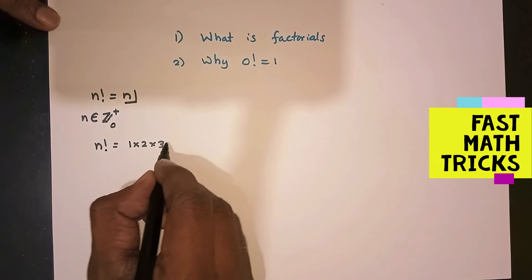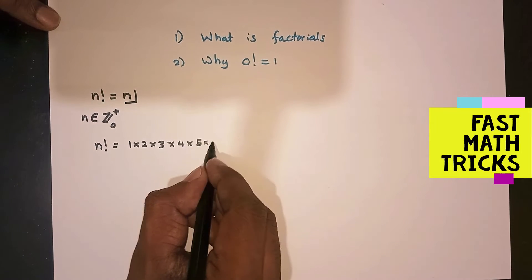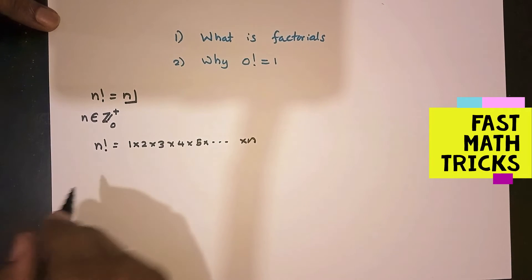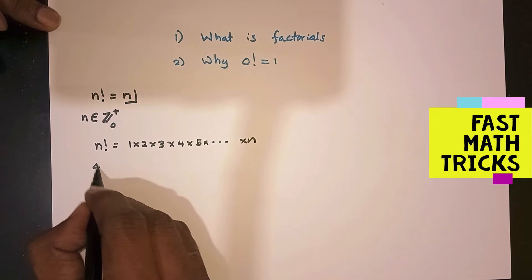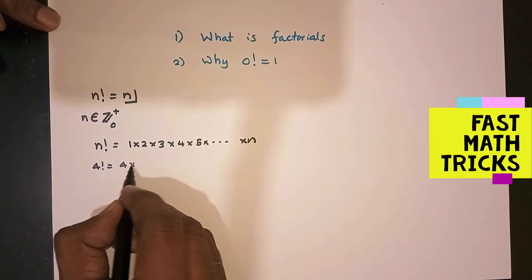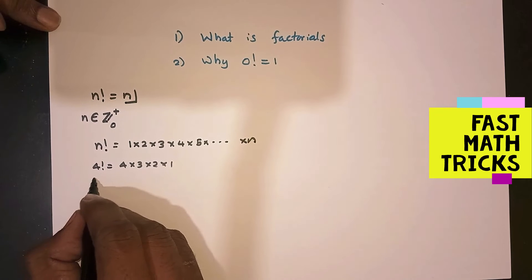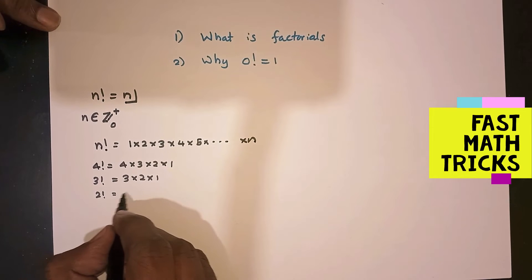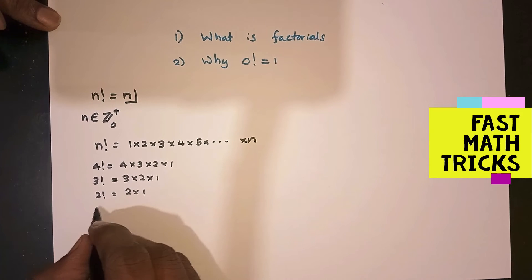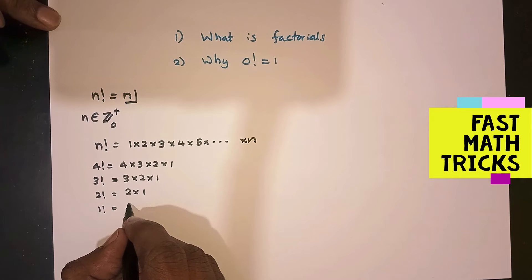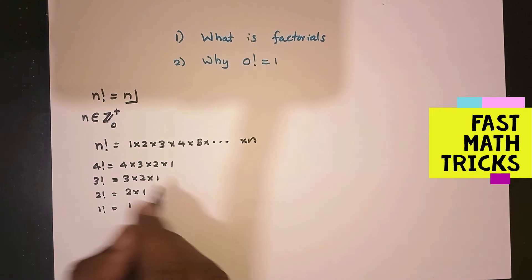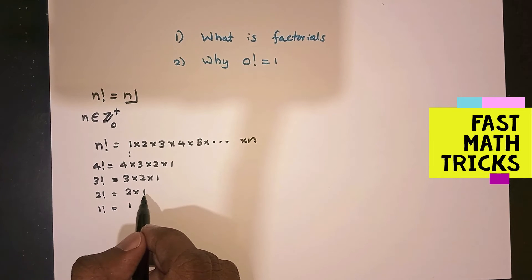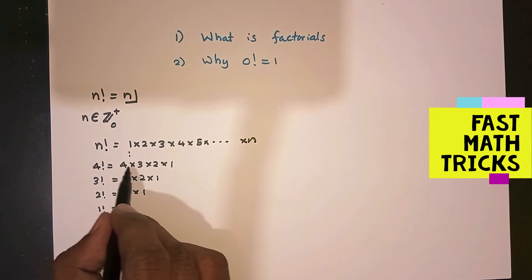The definition: n factorial is the product of integer values — 1 into 2 into 3 into 4 into 5, up to n. So n factorial represents an integer product. For example: 4 factorial equals 4 into 3 into 2 into 1; 3 factorial equals 3 into 2 into 1; 2 factorial equals 2 into 1; and 1 factorial equals 1.